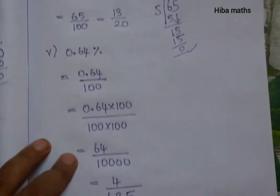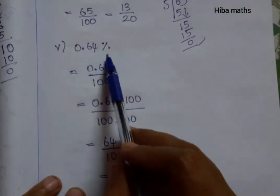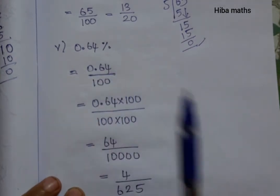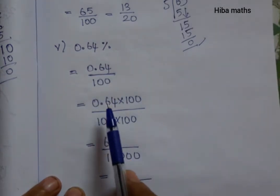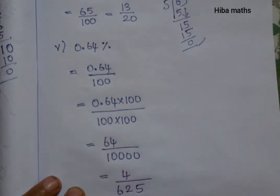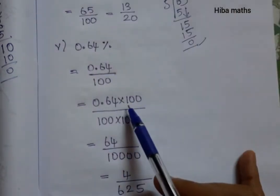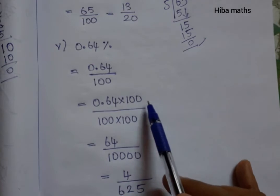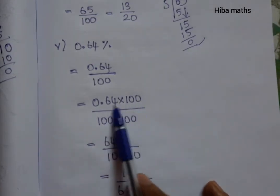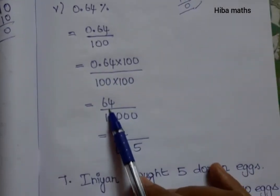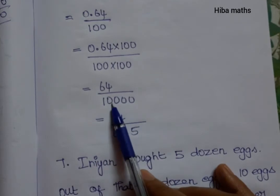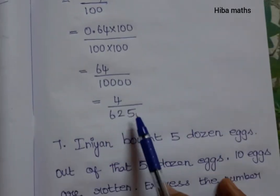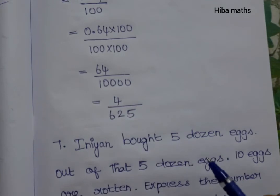The fifth question is 0.64%. A percentage is divided by 100, so 0.64 divided by 100. When we divide by 100, that's two more decimal places: 1, 2, 3, 4 - four zeros total, giving us 64 over 10000. Now we can simplify this using the 4 times table.